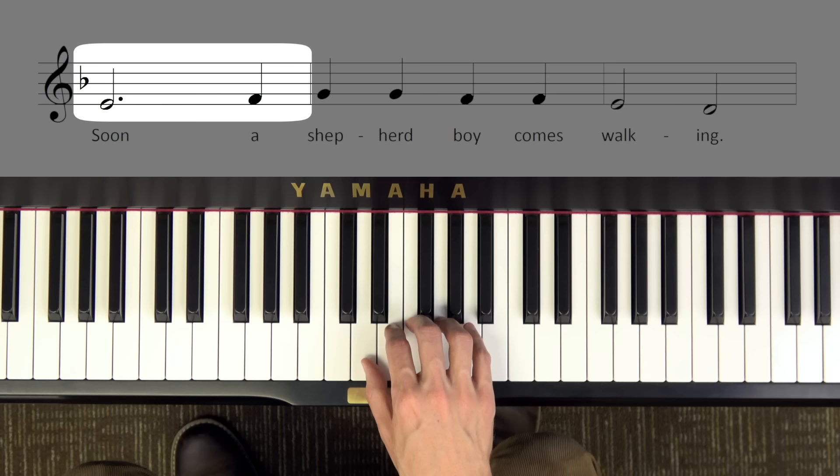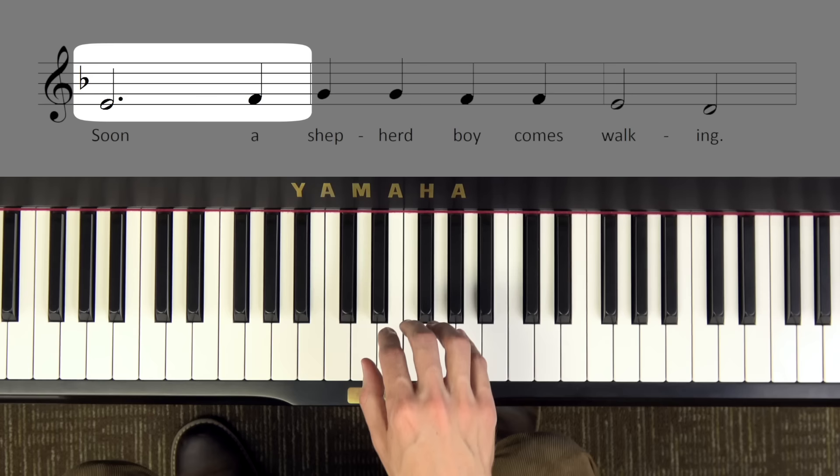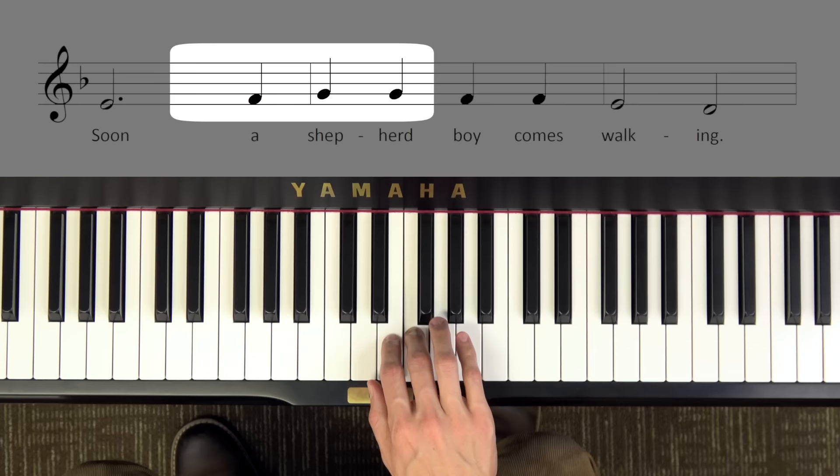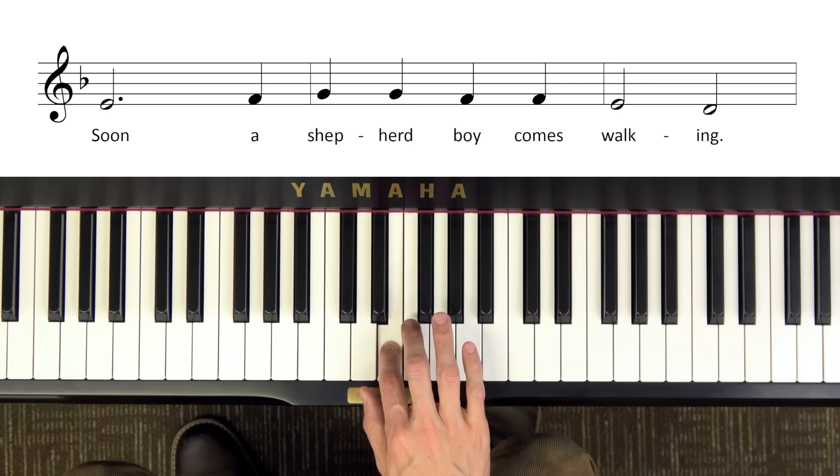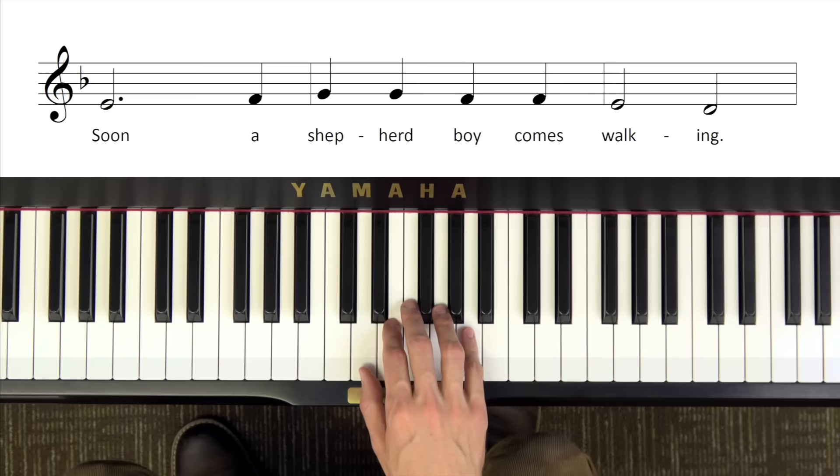So for line three, we're still in the D minor pentascale, and this time since the first note is an E, we need to start with finger two. So we'll have one, two, three, then step up to F, G, G, F, F, E, D. Now, press pause and practice line three. Don't forget to hold that E, that dotted half note for three beats before you go on. Press play once you've practiced that, and you're ready to try it with me.